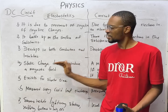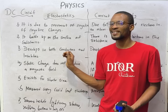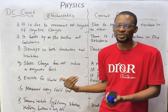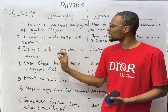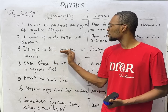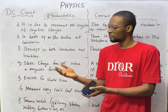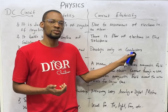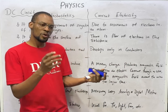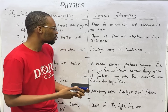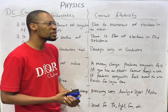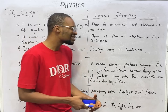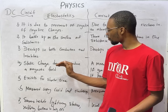Electrostatics can develop in both conductors and insulators. Conductors are materials that allow current to pass through them easily because they have lower resistance. Static charges can be found in rubber, metals, or any material. Current, on the other hand, only develops in conductors. For insulators, current cannot flow because their electrons are tightly bonded — they don't have free electrons.